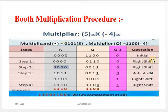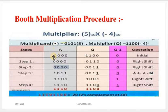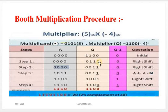After the right shift in Step 1, the bits shift right: the accumulator MSB is repeated, giving 0000, Q becomes 0110, and Q minus 1 becomes 0. Now again we check Q naught and Q minus 1 — both are still the same, so in Step 2 we apply another automatic right shift.